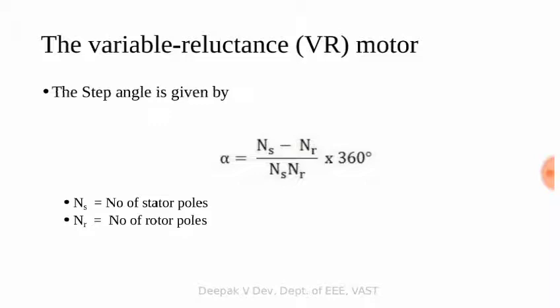In the previous case, stator poles Ns = 4 and rotor poles Nr = 2. Applying the formula: (4 minus 2) divided by (4 into 2) into 360 = 2 divided by 8 into 360 = 1/4 into 360 = 90 degrees. So the calculated step angle is 90 degrees.